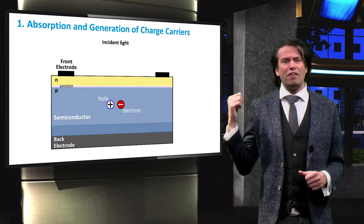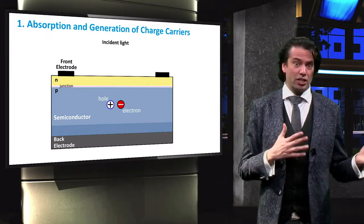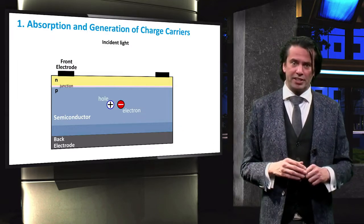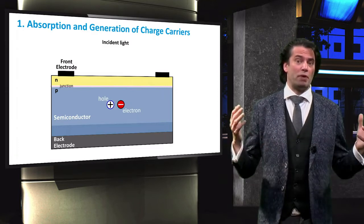Here we show one photon of light exciting a single electron-hole pair. In reality, there will be many electron-hole pairs generated at once with a full spectrum of light.